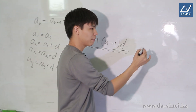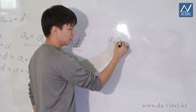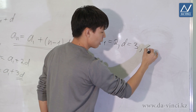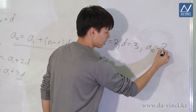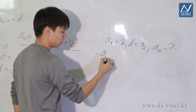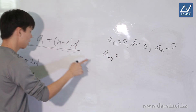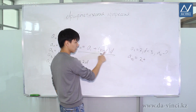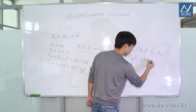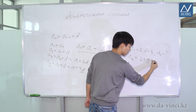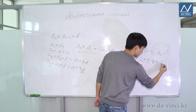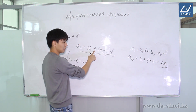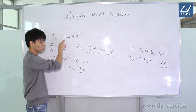Let's take a look at an example. We have an arithmetic progression with a1 equal to 2 and difference d equal to 3. It is required to find the tenth term of this progression. Using the formula, a10 equals a1 plus (n minus 1) times d, that is 2 plus 9 multiplied by 3, which equals 29. Thus, using this formula we can find any term of the sequence without using the recurrence relation.